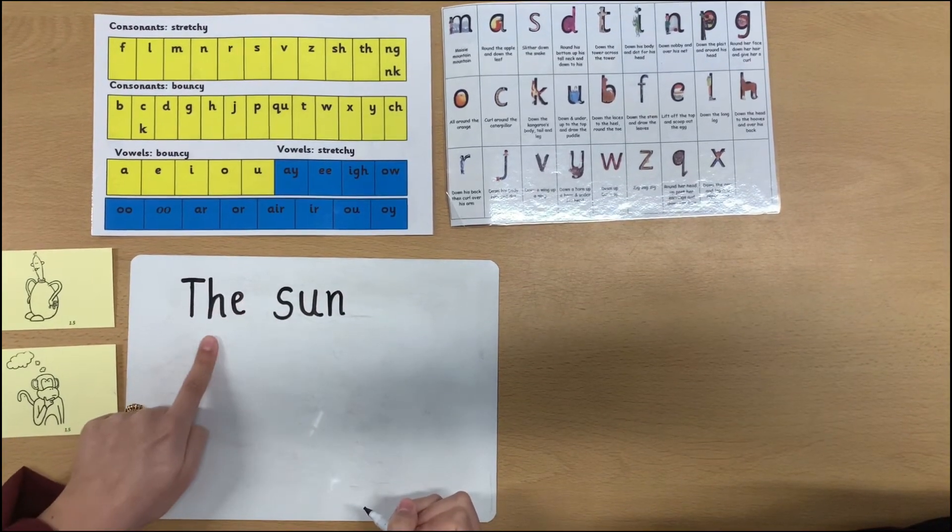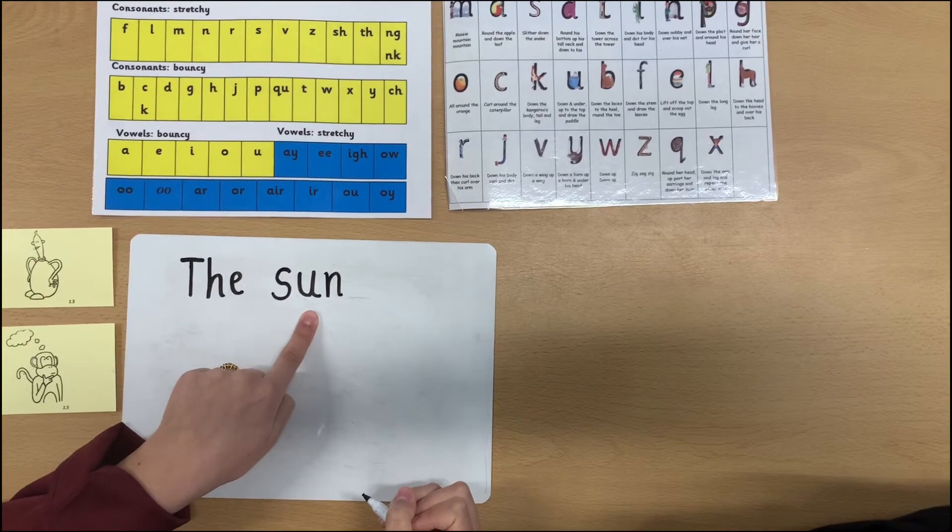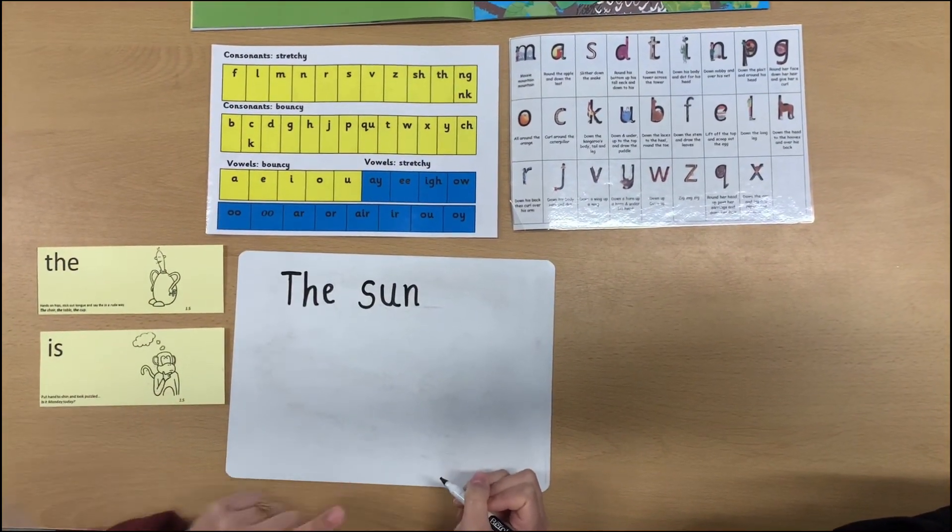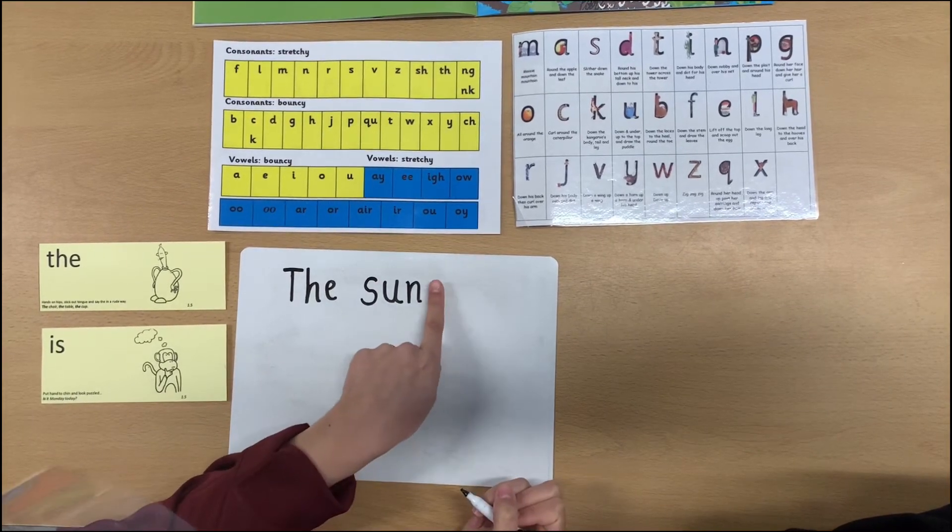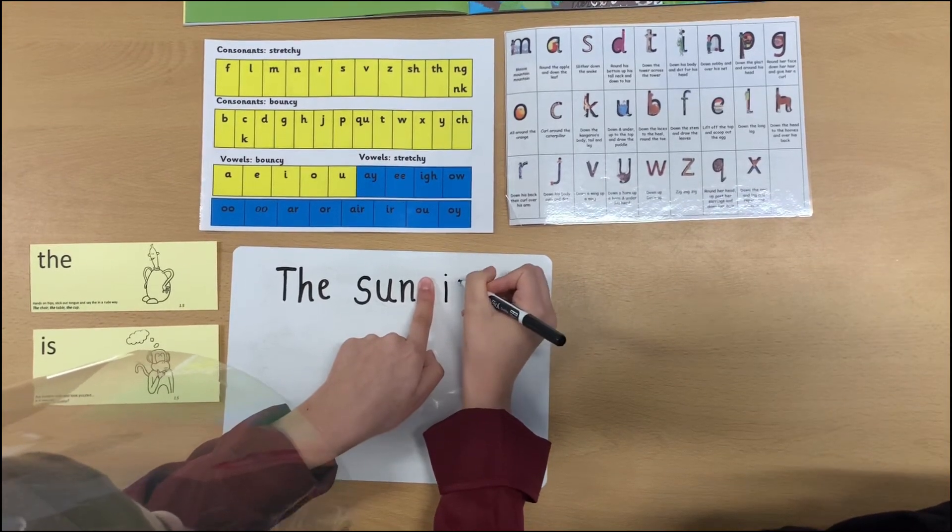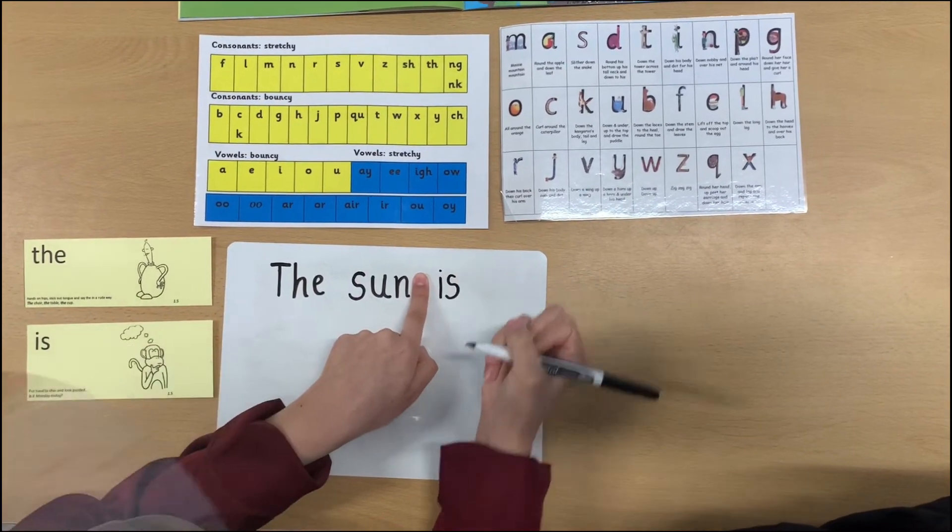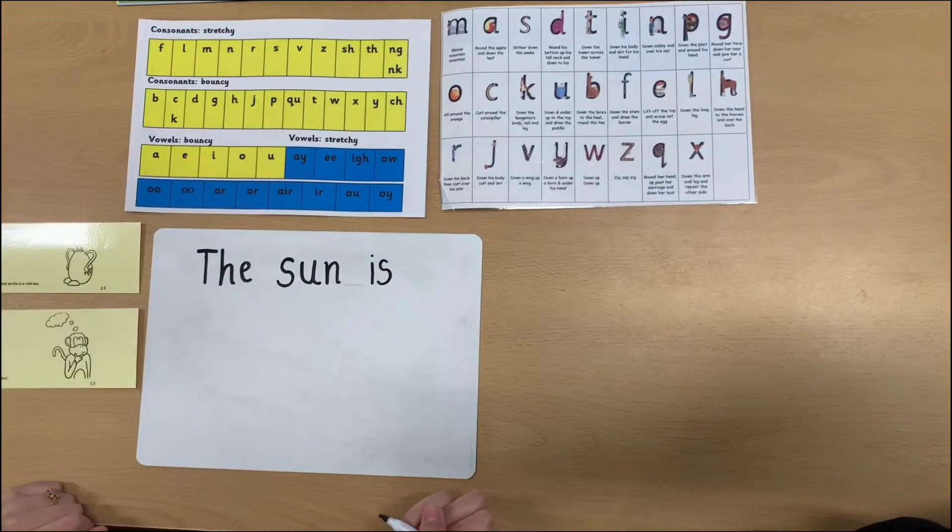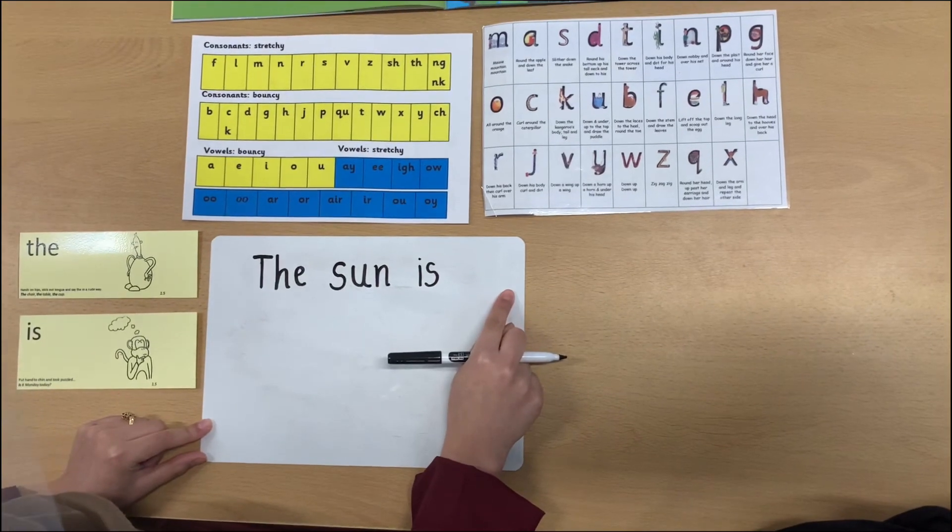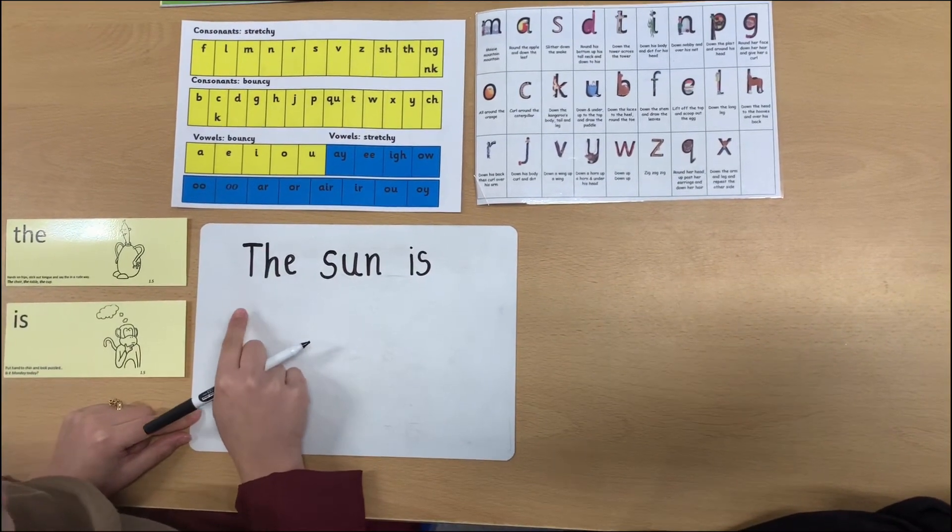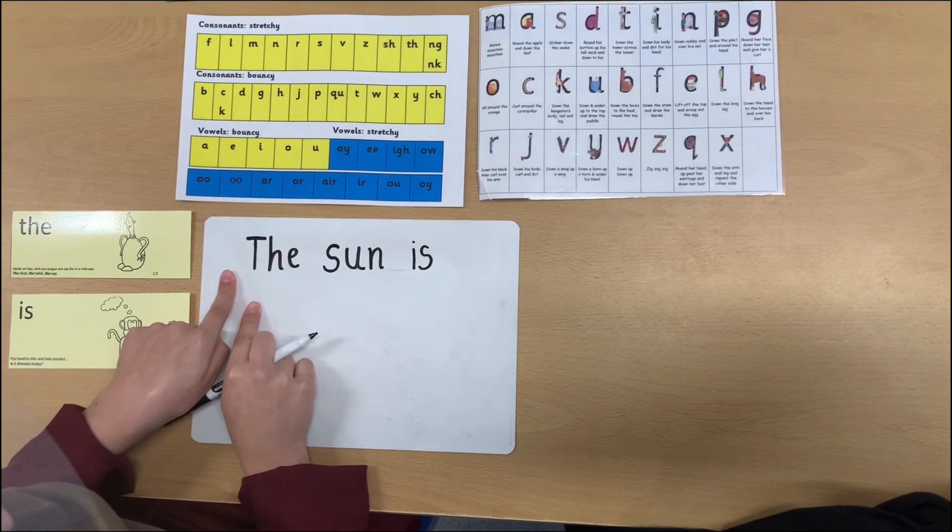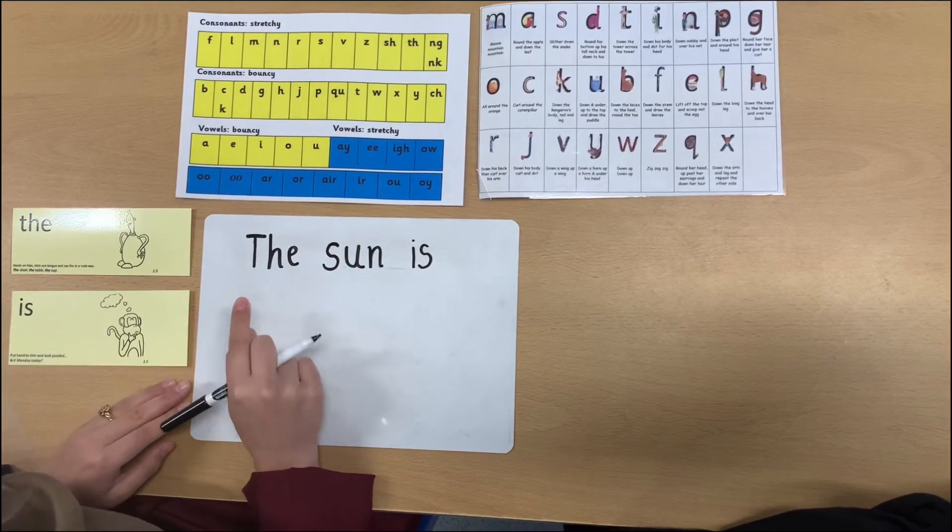We've got the sun. I need to now write is. I've got my is right here. So I need to do a finger space. Is, is, is. There isn't enough space here for me to write yellow. So I'm going to move on to the next line. But I don't need to do a finger space at the beginning. Okay? I just write the word.